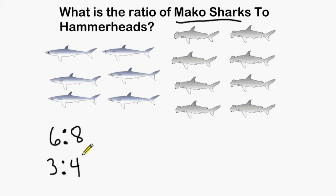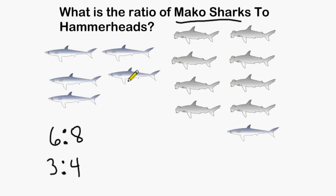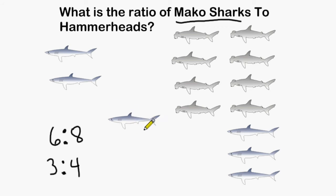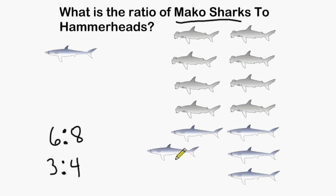So in this most simplified version we can say that for every 3 mako sharks there are exactly 4 hammerhead sharks. We may move these objects around just to see if this is a true statement. I am going to drag 3 mako sharks right underneath 4 hammerhead sharks and see if we have indeed 3 mako sharks for every 4 hammerhead sharks.